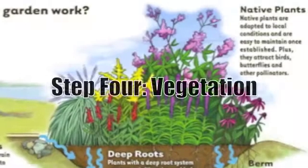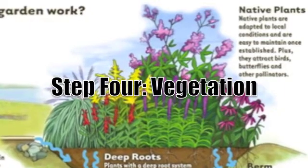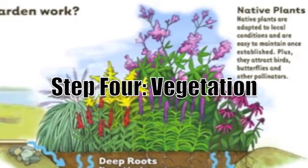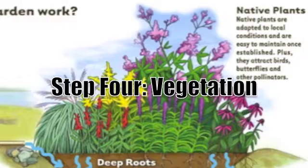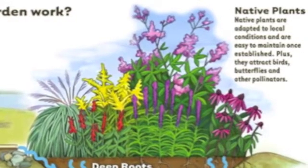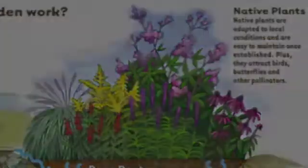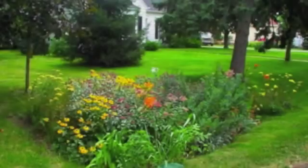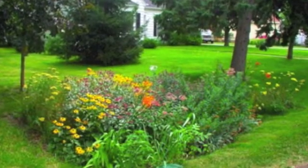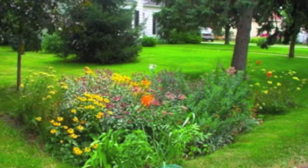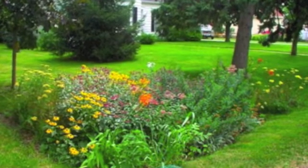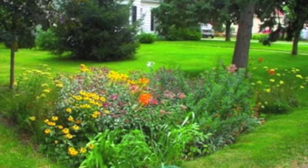Finally, the last step consists of choosing your vegetation. They should not only be aesthetically pleasing, but should be some young native plants that are chosen for their structure and height. Maintenance is very important and rain gardens must be watered regularly and weeding should occur during the first two seasons.